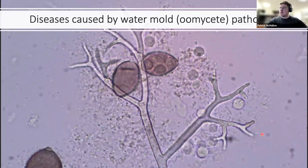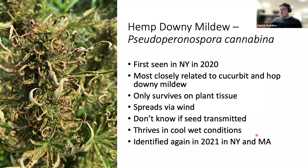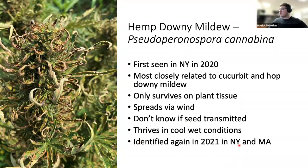Moving on to diseases caused by water molds or oomycetes, one we've seen several years in a row in New York is hemp downy mildew. In hemp, it's caused by Pseudoperonospora cannabina — first observed in New York in 2020. This species is most closely related to cucurbit and hop downy mildews. It's an obligate biotroph, meaning it needs living plant tissue to survive. Spores spread via wind, and it thrives in cool, wet conditions. It was also seen in 2021 in New York and Massachusetts.